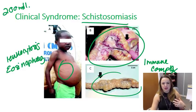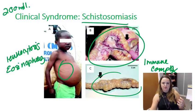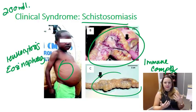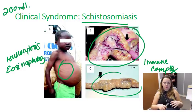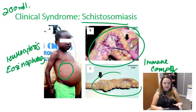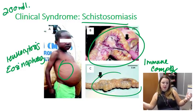Katayama syndrome is really a result of migration of immature worms. With Katayama syndrome you see marked fever and chills, cough, and urticaria — chronic hives covering a large portion of the body. You'll also see abdominal pain and arthralgias. Katayama syndrome tends to begin approximately one to two months after primary exposure or first exposure in a long time, and it can last for as long as three months.